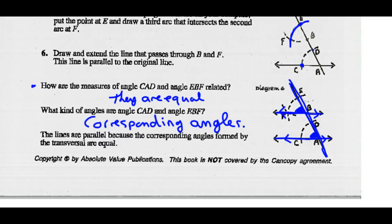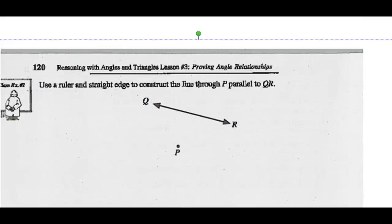Now, if you go over to the next page, example one, it wants us to do this construction — the exact same thing. They laid out all the steps for you on the previous page. We're going to do it now. Use a ruler and straight edge — and a compass as well — to construct the line through P parallel to Q.